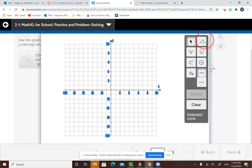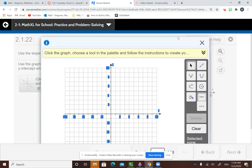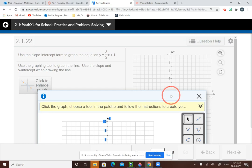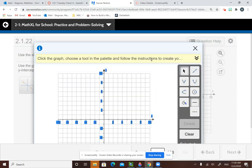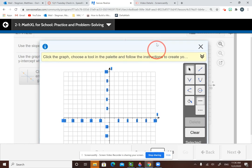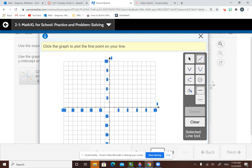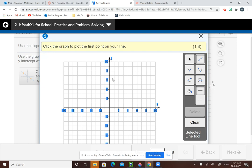In order to graph it using the y-intercept, we're going to take that number, which in this case is 1, and I'm going to take the graphing feature and find 1 on my y-axis. Here's 2, so 1 is right below it.